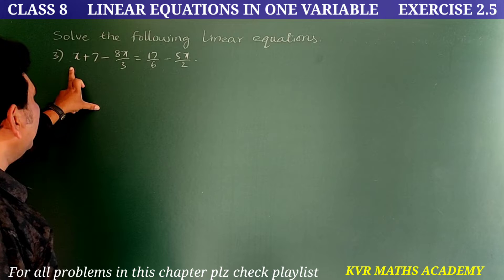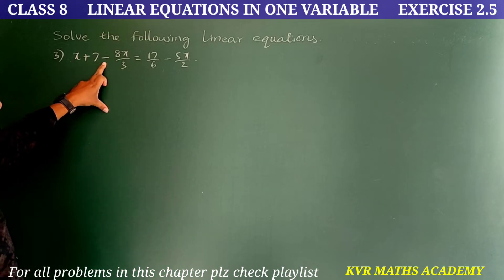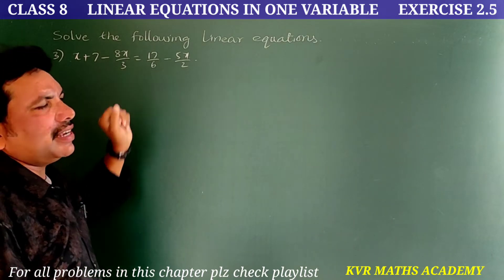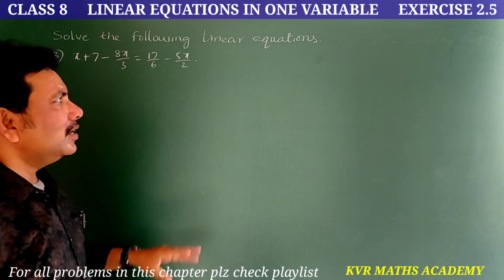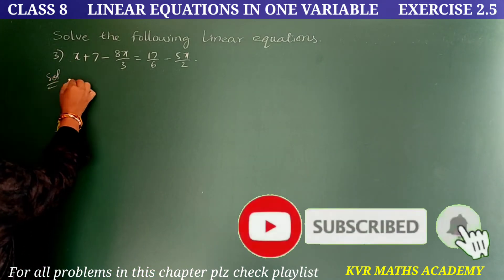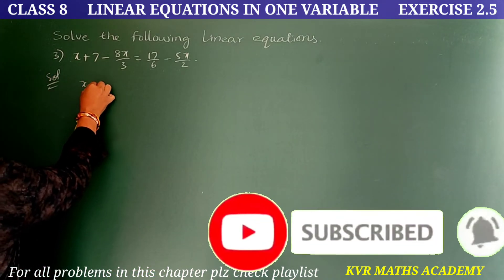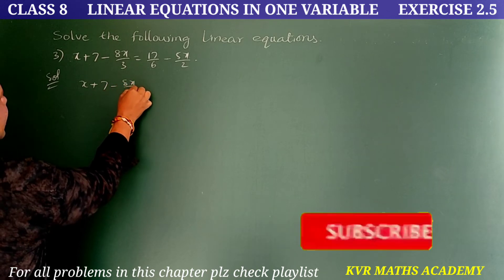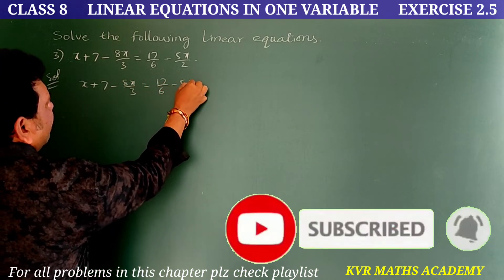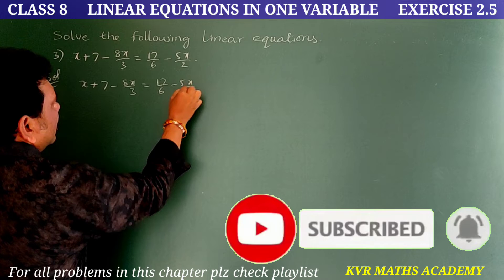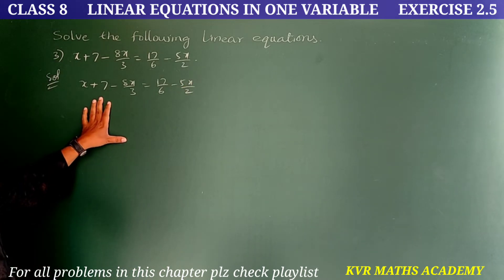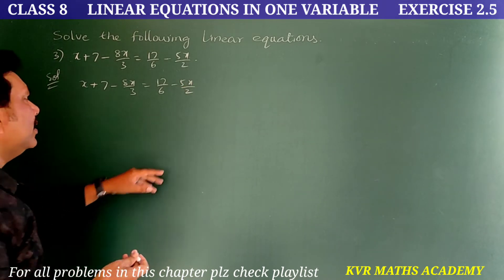Third question: x + 7 - 8x/3 = 17/6 - 5x/2. Let us solve it. Given equation: x + 7 - 8x/3 = 17/6 - 5x/2.